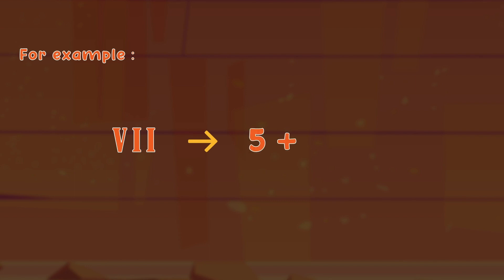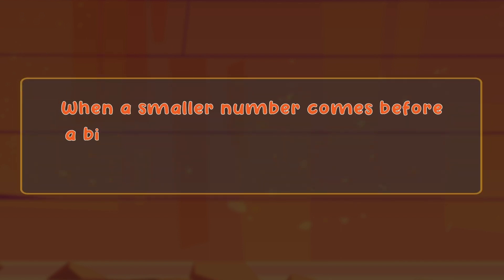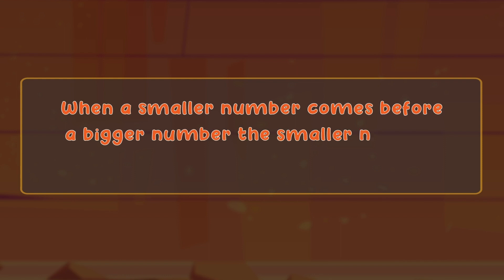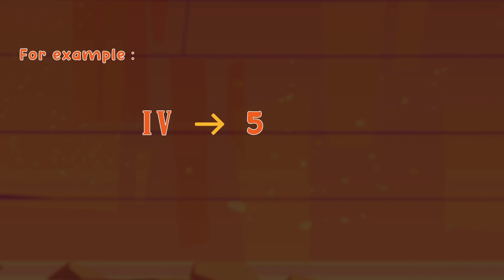Similarly, VII means 5 plus 1 plus 1 equals 7. When a smaller number comes before a bigger number, the smaller number gets subtracted from the bigger number. For example, IV means 5 minus 1, which is equal to 4.